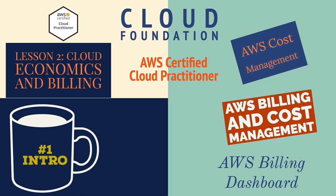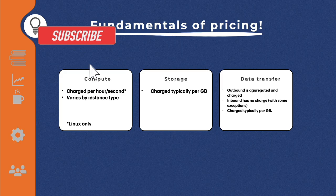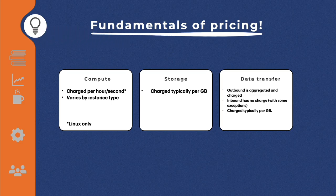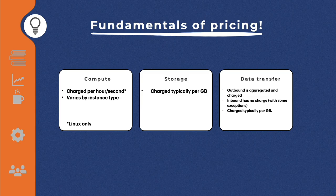Welcome back to Lesson 2 of Cloud Foundation. We're going to look at cloud economics, billing, and the AWS billing dashboard. First, let's understand the fundamentals of pricing in AWS. For compute services, you are charged per hour for Windows machines or per second for Linux machines, and this varies by instance type — a t2.micro costs far less than a t2.xlarge. For storage, you are charged by the number of gigabytes stored in Amazon S3. For data transfer, all inbound data is free, and moving data within the same region is also free, but moving data between two different regions costs extra.